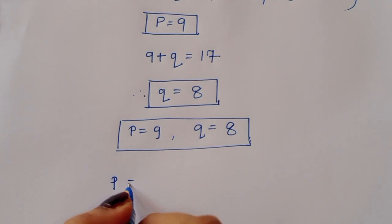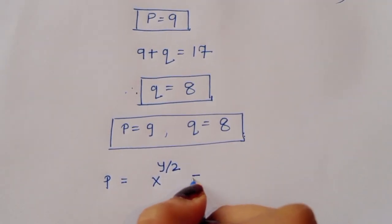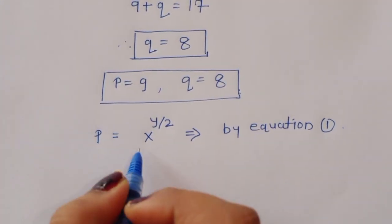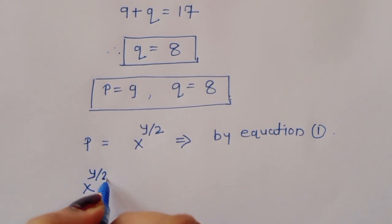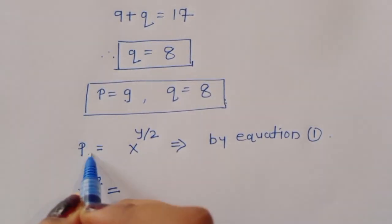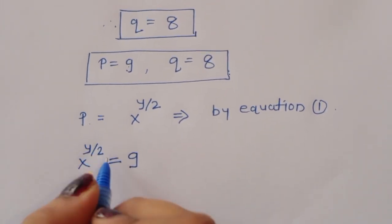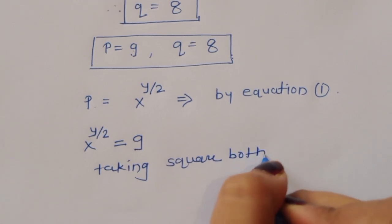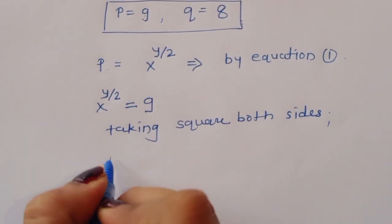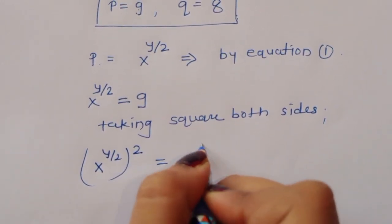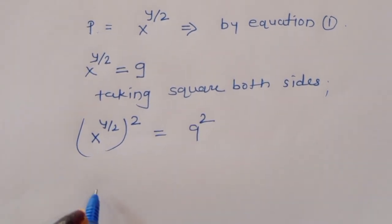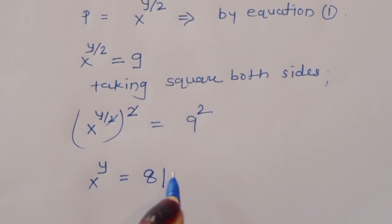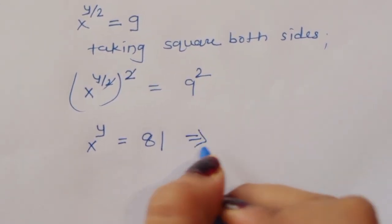From equation 1, p equals x power y by 2. Since p equals 9, we have x power y by 2 equals 9. Taking square on both sides, x power y by 2 squared equals 9 squared. The half power cancels, giving x power y equal to 81. This is equation 5.